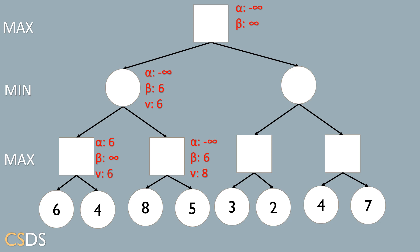We can now check if we can prune the right branch. Alpha (eight) is greater than beta (six), so we can prune the right branch of the subtree. We pass v upward, but eight is greater than six, so v in the parent node remains six and is not updated. We continue passing v upward to the root node, where v is updated to six. The root node is a max node, so alpha is updated to six, and then alpha and beta are passed down.